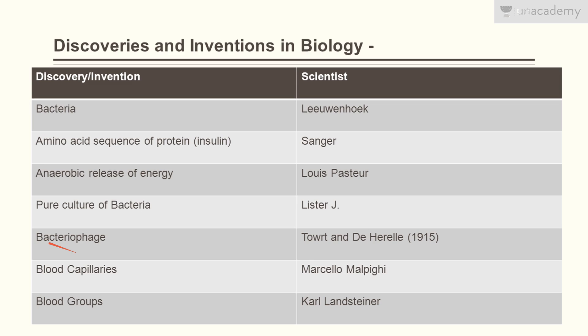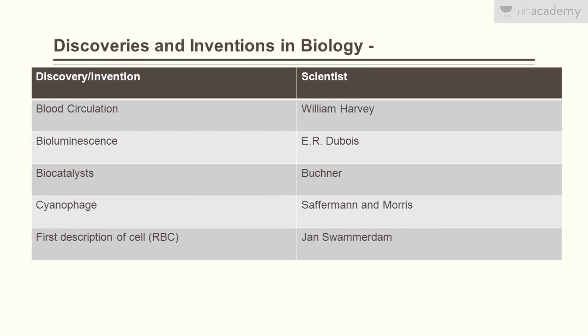Bacteriophage, that is a virus, was discovered by d'Herelle. Blood capillaries were first discovered by Marcello Malpighi. Blood groups were discovered by Karl Landsteiner. Blood circulation was discovered by William Harvey.